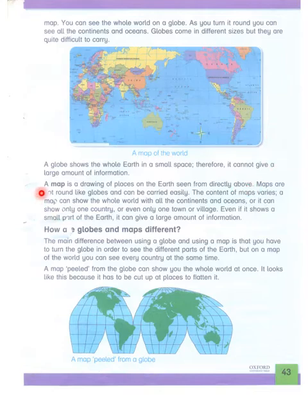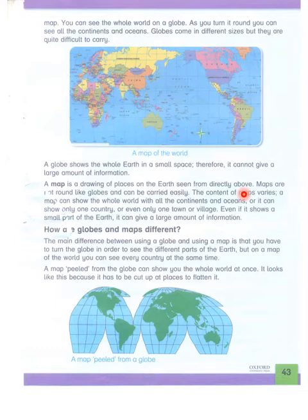A globe shows the whole earth in a small space, therefore it cannot give a large amount of information. Globe क्योंकि छोटे से होते हैं تو उन पे तमाम detailed मालूमات نहیں ہو سکتی۔ Maps are not round like a globe and can be carried easily — maps جو ہوتے ہیں وو globe کی طرح گول نہیں ہوتے اس لیے انہیں آسانی سے اٹھا کر لے جایا جا سکتا ہے، جیسے کاغذ کا piece of paper ہم آسانی سے کہیں لے جا سکتے ہیں۔